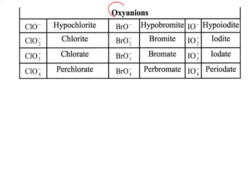These are called oxyanions — anions with oxygen in them. There's a pattern here: ions with 1 oxygen are hypo- and -ite; with 2 oxygens, they're -ite; with 3 oxygens, they're -ate; and with 4 oxygens, they're per- and -ate. So for chlorine: hypochlorite, chlorite, chlorate, perchlorate. For bromine: hypobromite, bromite, bromate, perbromate. For iodine: hypoiodite, iodite, iodate, and periodate.